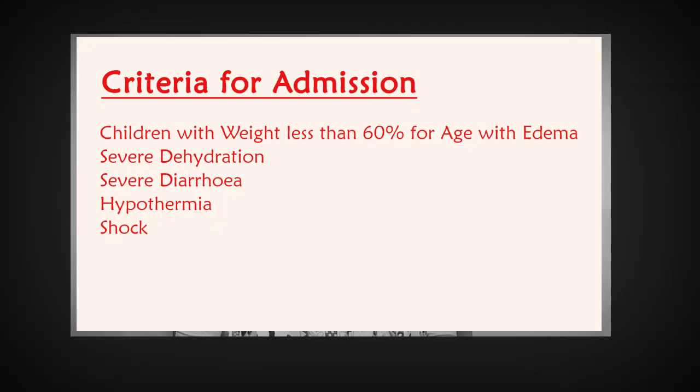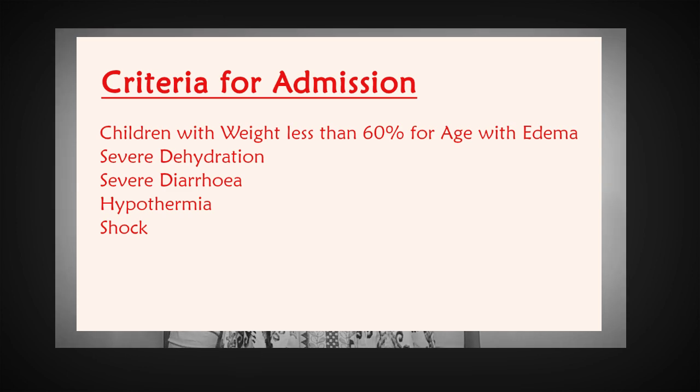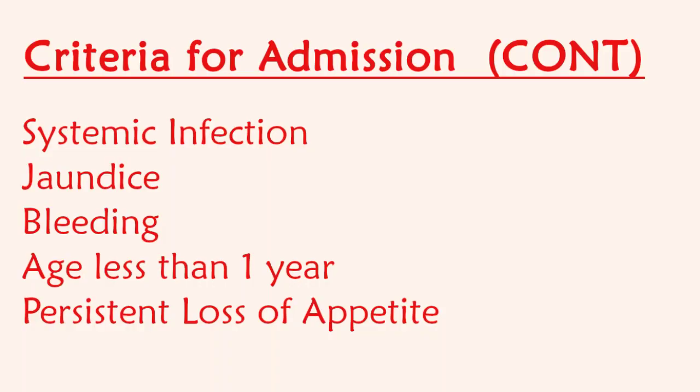Criteria for hospital admission: child with less than 60% of weight for age, with edema, severe dehydration, severe diarrhea, hypothermia, shock, systemic infection, jaundice, bleeding, age less than required, or persistent loss of appetite. If any of these are present, the patient will require immediate hospital admission.